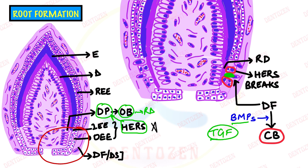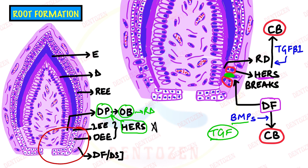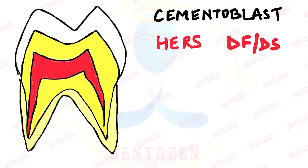So we have seen that cementoblasts come from dental follicle cells. But there is another source: recent evidence indicates that HERS can also form cementoblasts with the help of transforming growth factor beta-1. This type of transition from an epithelial cell to a mesenchymal cell is called epithelial-mesenchymal transition (EMT). So cementoblasts come from two sources: the first source is the dental follicle, and the second source is HERS.